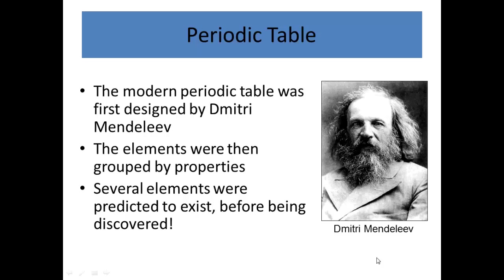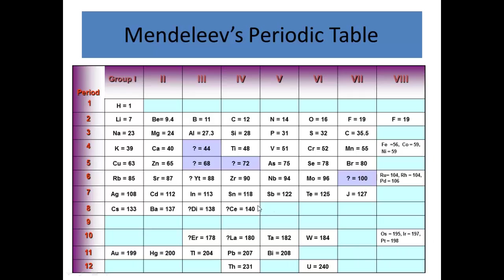First periodic table was designed by Mendeleev. He grouped them by properties, similar to that little card sorting activity that we did the other day. And interestingly enough, kind of how we did it, he actually predicted that there were elements before they existed. So he grouped them by properties. You might notice that you have hydrogen, lithium, sodium, potassium in the periodic table in the alkaline metals column.